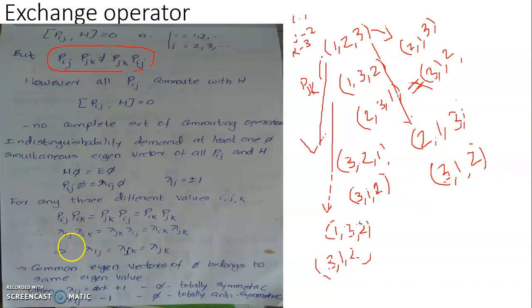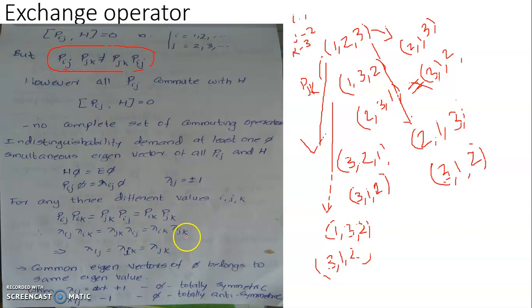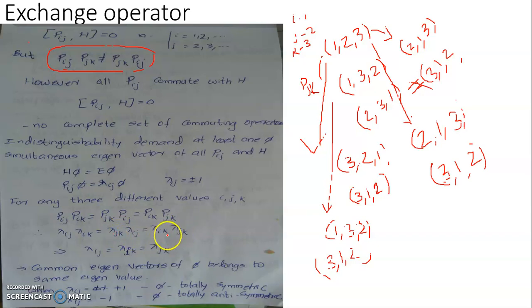This indicates that their eigenvalues also will have similar behavior. Then P_ij P_ik is equivalent to λ_ij λ_ik, which equals λ_jk λ_ij, which equals λ_ik λ_jk. Since these are eigenvalues, you can cancel equivalent terms. You have λ_ij on both sides, giving λ_ik equal to λ_jk. Further from this, λ_jk equals λ_ik.